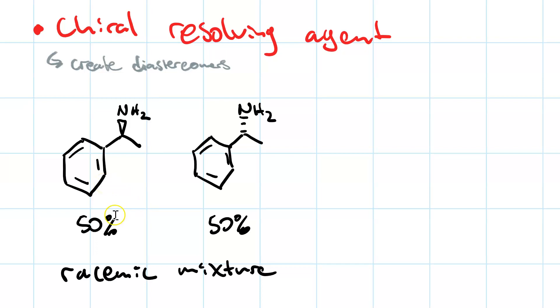So say you have a racemic mixture of these phenethanamines, 50% of the S-isomer and 50% of the R-isomer, and you want to separate them.